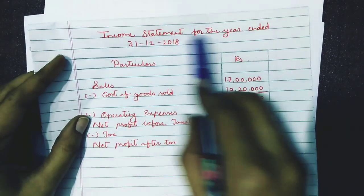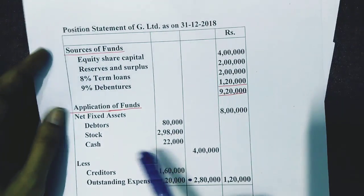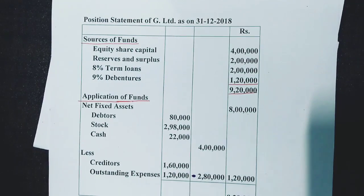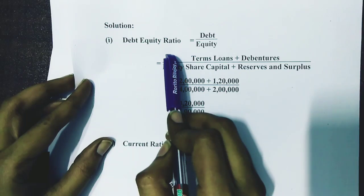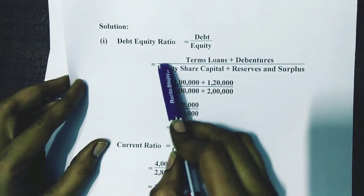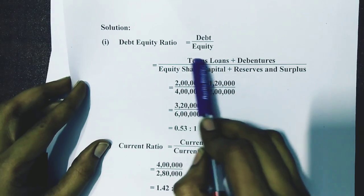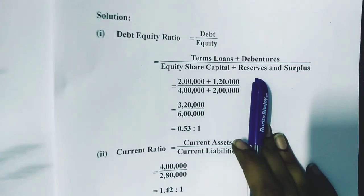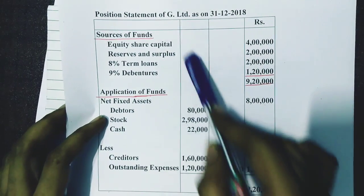They have given you an income statement as well as a position statement, that is your balance sheet. Now we are going to start solving the sum. The first one they have asked is the debt equity ratio. The formula is debt divided by equity, as we studied in the previous session. This ratio amounts you will get from your balance sheet, and you have to search the amount in the uppermost part of your balance sheet.